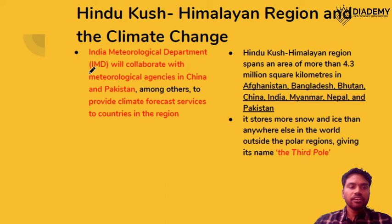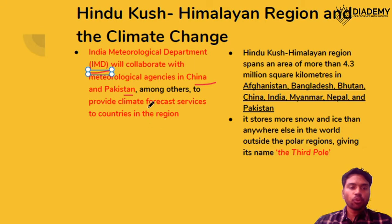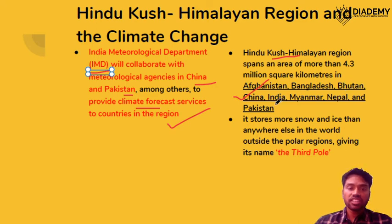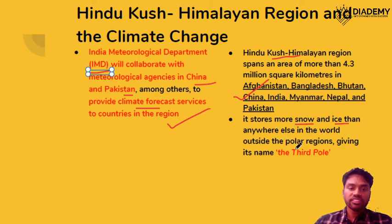The next topic is the India Meteorological Department (IMD), which in collaboration with Chinese and Pakistani meteorological agencies has developed climate forecast services for the Hindukush Himalayan region. This region spans Afghanistan, Bangladesh, Bhutan, China, India, Myanmar, Nepal, and Pakistan. It stores more snow and ice than anywhere else in the world outside the polar regions (Arctic and Antarctic), which is why it is called the Third Pole.